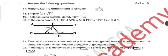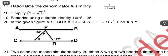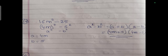Question 19: factorize using a suitable identity: 16m² − 25. We write this as (4m)² − 5². This is in the form a² − b², and we know the identity a² − b² = (a + b)(a − b). With a = 4m and b = 5, the answer is (4m + 5)(4m − 5).